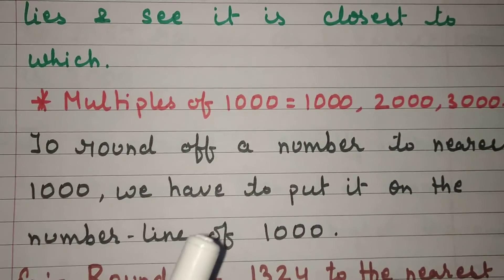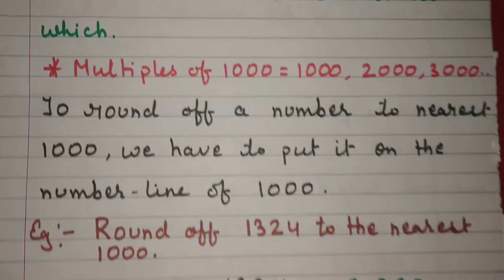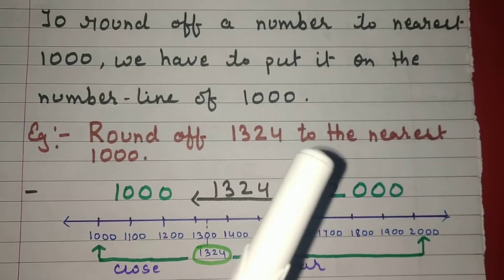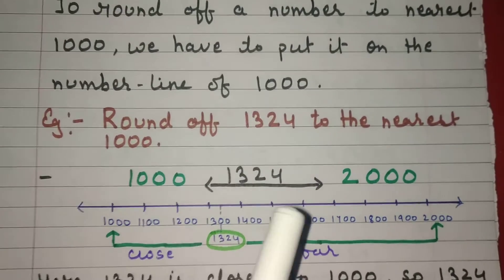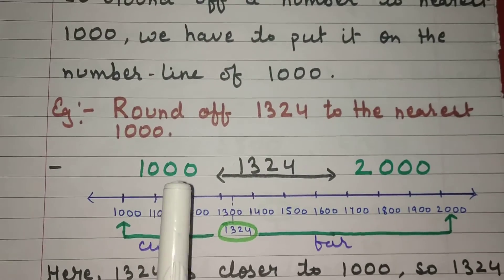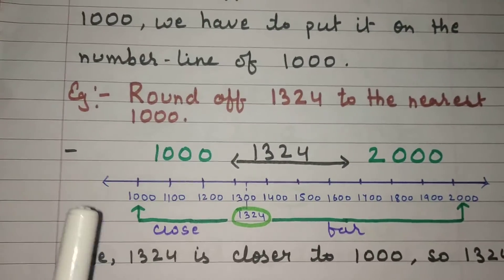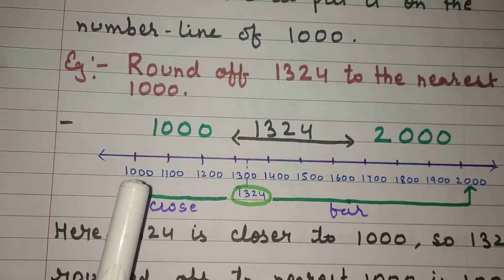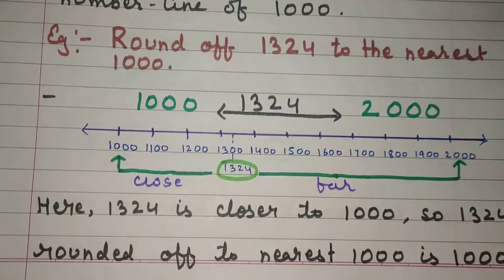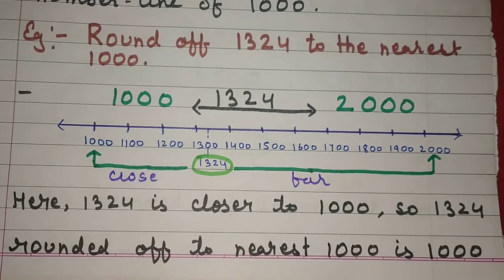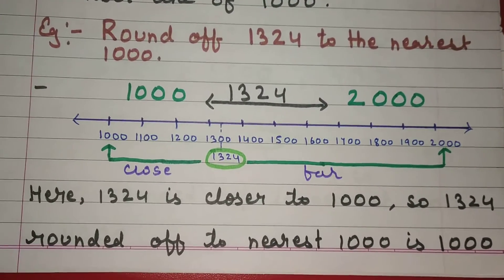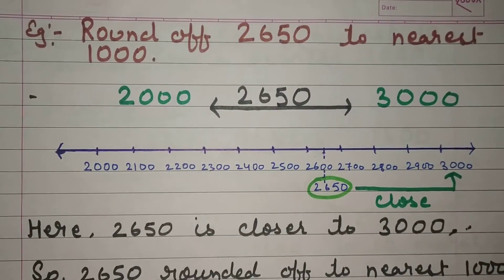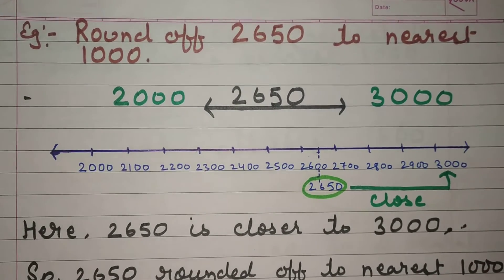To round off a number to the nearest thousand, we put it on a number line of thousands. Example: Round off 1324 to the nearest thousand. 1324 lies between one thousand and two thousand. It is closer to one thousand and far from two thousand. So 1324 rounded off to the nearest thousand is one thousand.